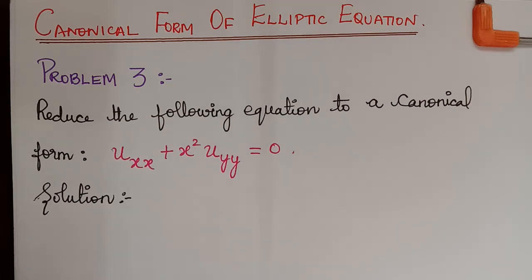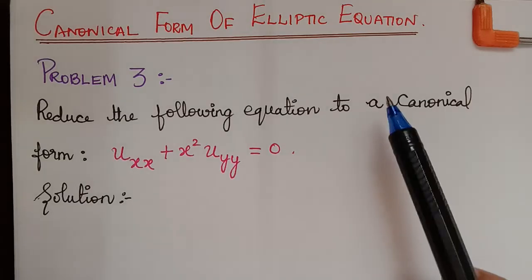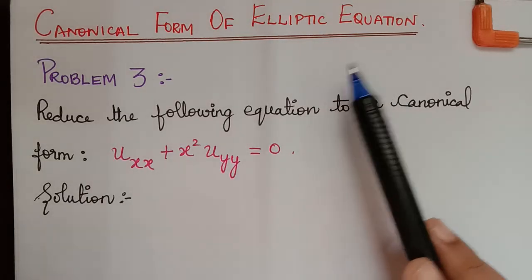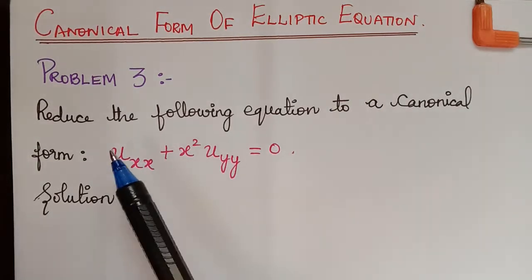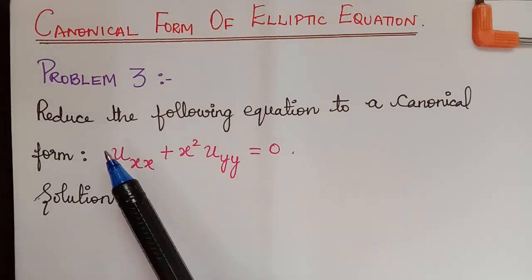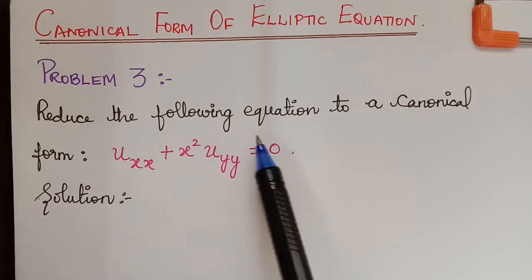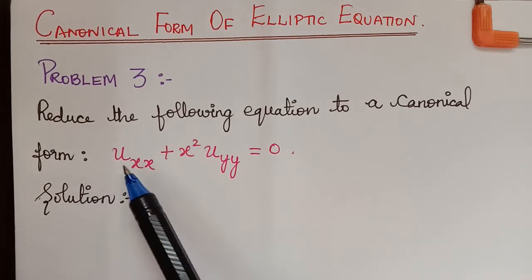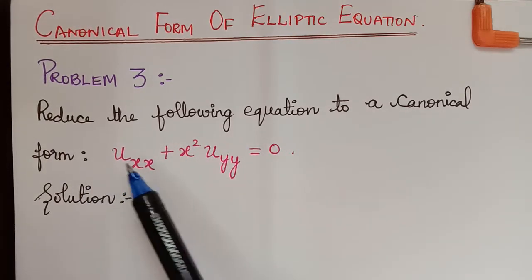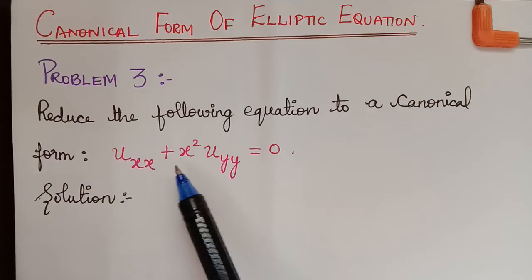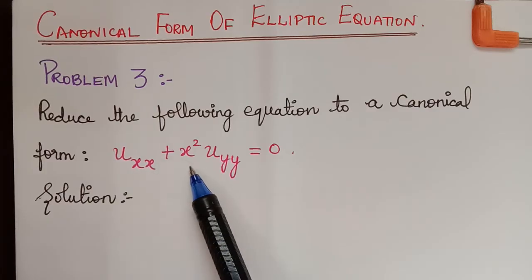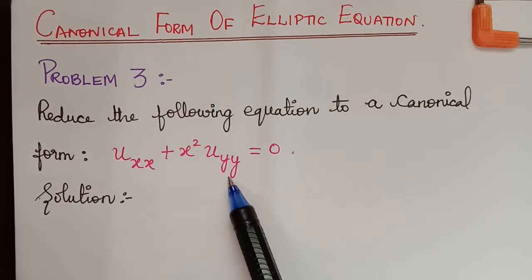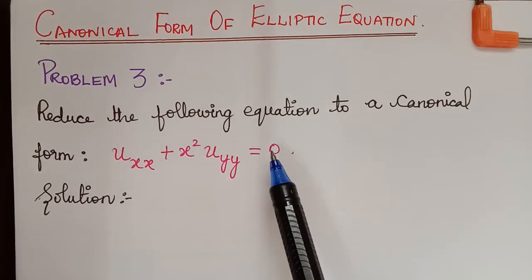Hello students. Under the topic canonical form, we are going to deal with the elliptic type of equation. We have a question: reduce the following equation to a canonical form. The given equation is uxx plus x squared uyy is equal to 0.